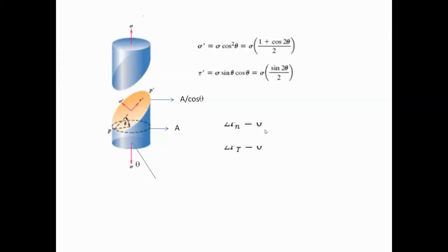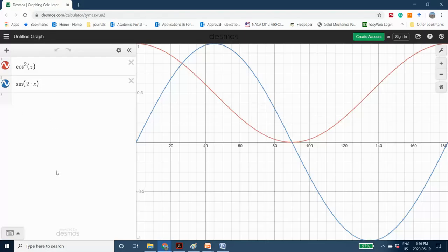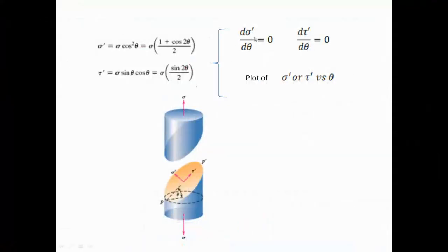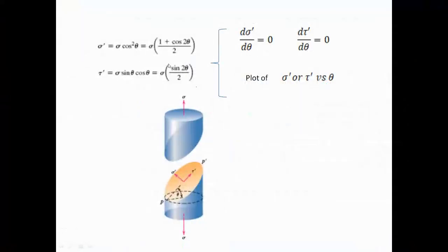To make the plot, I use the website desmos.com, which is a free online graphing tool — perfect for plotting and making graphs online. I assume sigma is a unit value, so both equations reduce to simple forms: normal stress becomes y equal to cosine squared theta, and shear stress becomes y equal to sine squared theta divided by... let me set sigma prime along the vertical axis and theta along the horizontal axis.